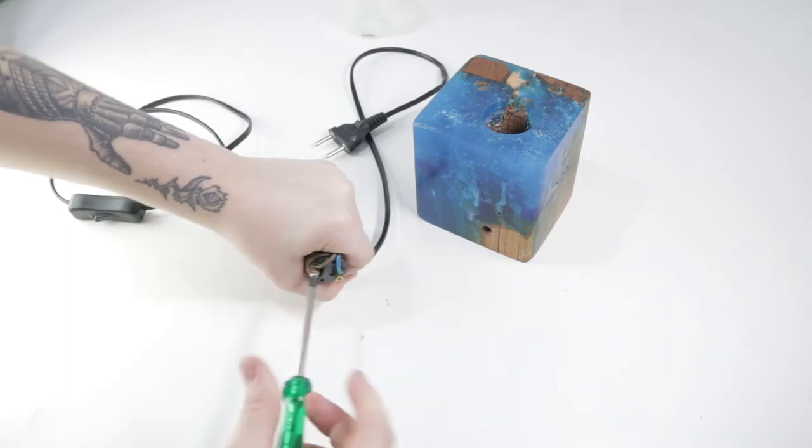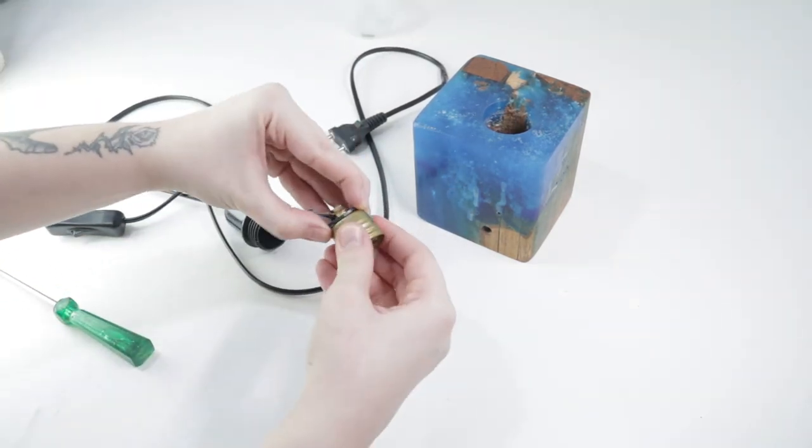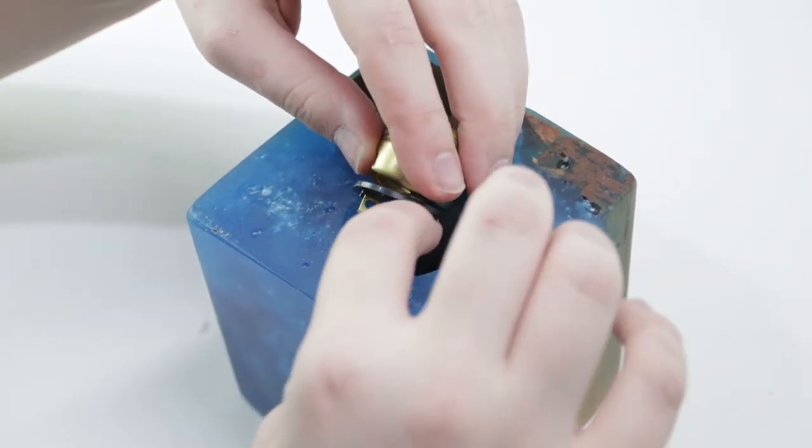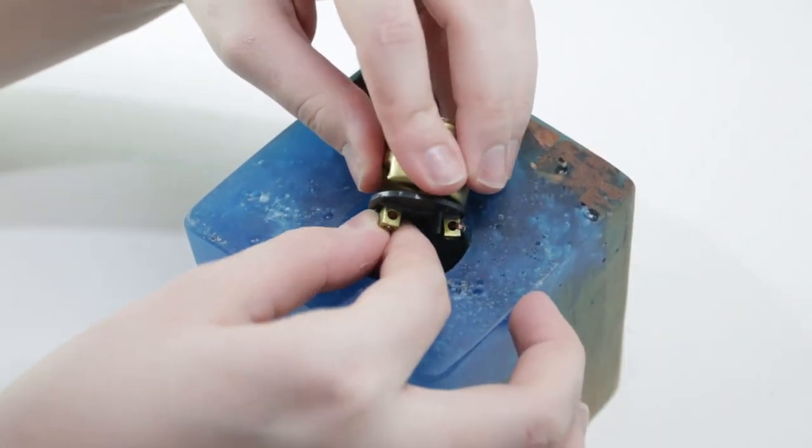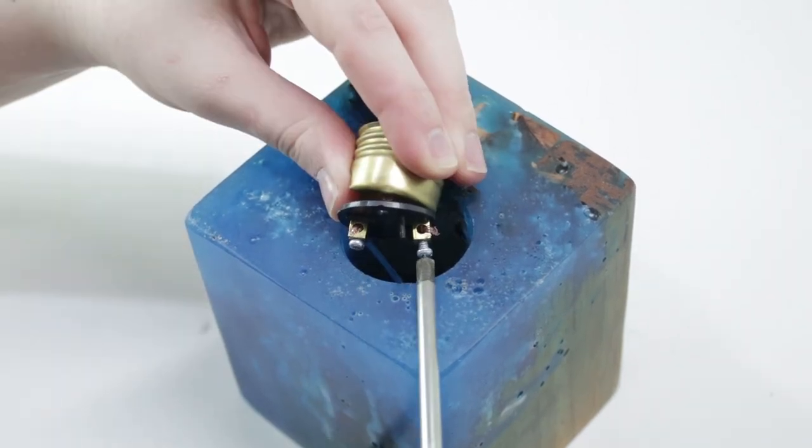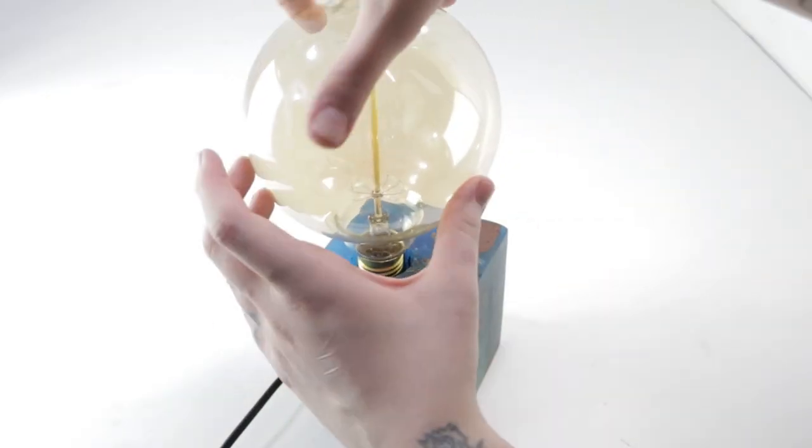So this was the final step. I grabbed this wire, took it apart, passed it through the hole, put the screws back, glued everything with hot glue, and then I put the light bulb in.